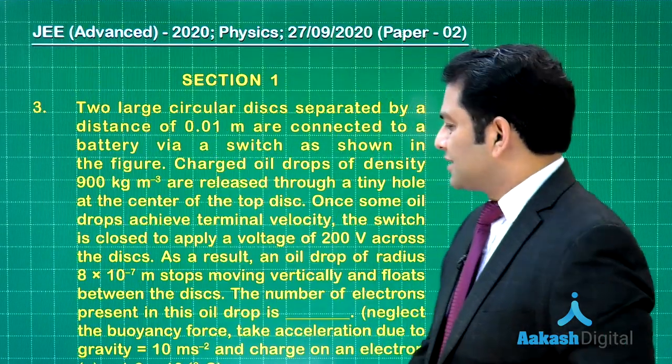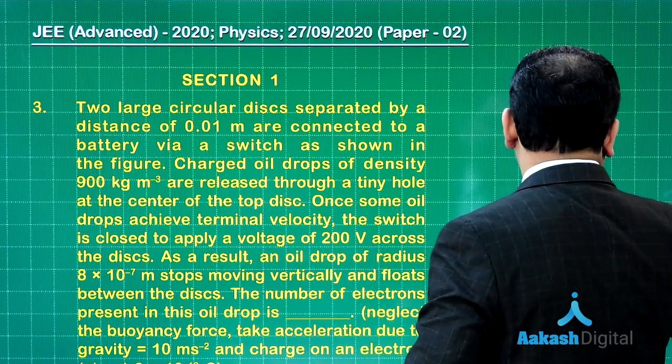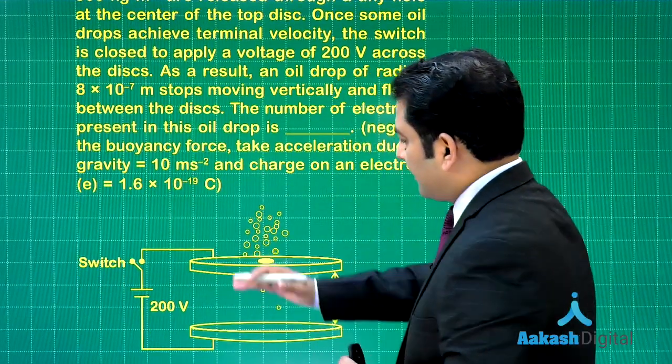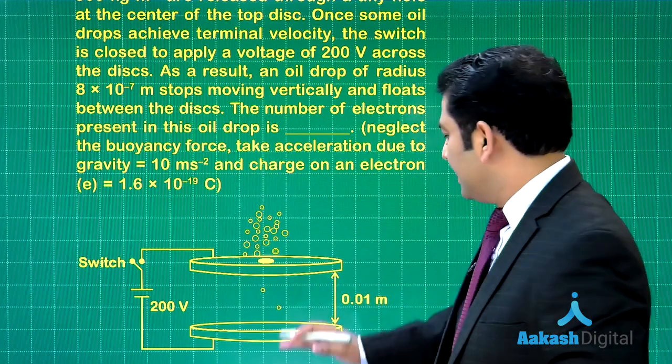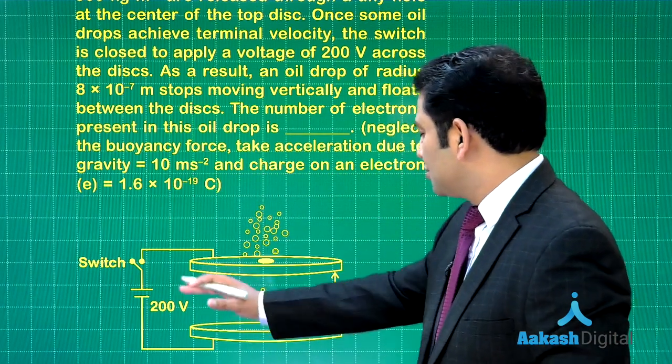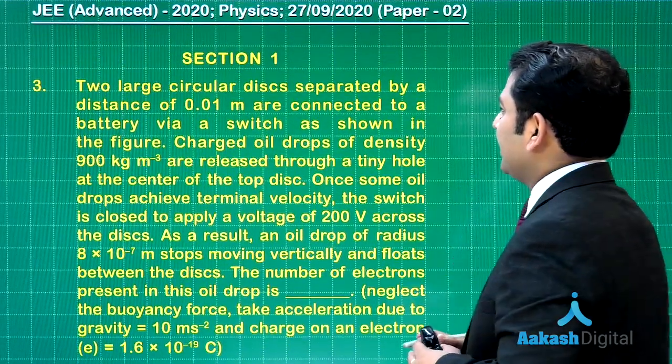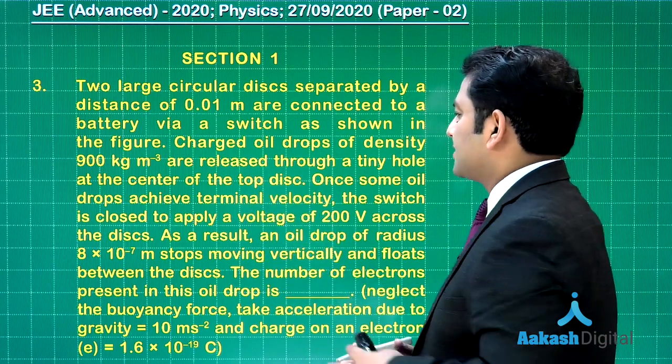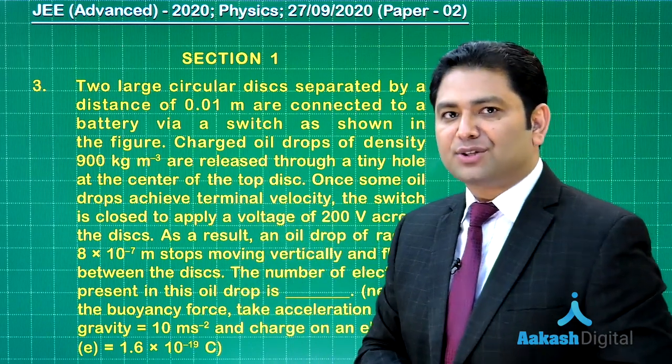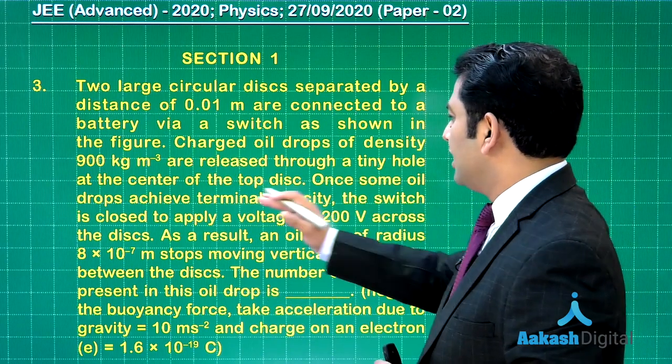Let's go to the next question. This is very straightforward—don't get scared by the volume of sentences. Here is an arrangement with two disks maintained at a potential difference of 200 volts. Separation between them is 0.01 meter, so the electric field between them is 200 divided by 0.01. The density of the oil is given.